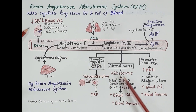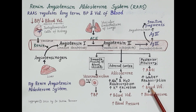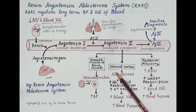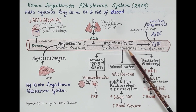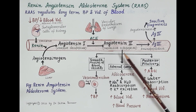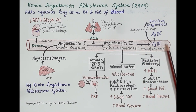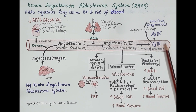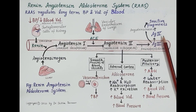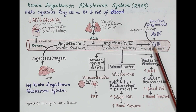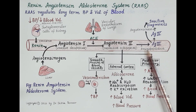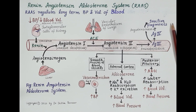In summary, a fall in blood pressure or blood volume stimulates RAS, which increases blood volume and blood pressure. Now regarding the metabolism of Angiotensin 2: it has a very short half-life of one minute. The enzyme aminopeptidase degrades Angiotensin 2 to Angiotensin 3, which is further degraded by aminopeptidase to Angiotensin 4. Angiotensin 3 and 4 are also degraded by the enzyme angiotensinase to inactive fragments.